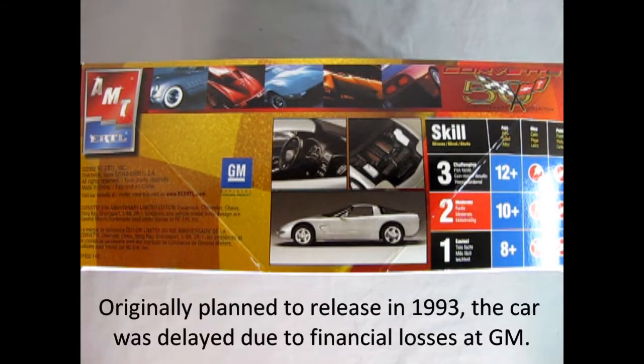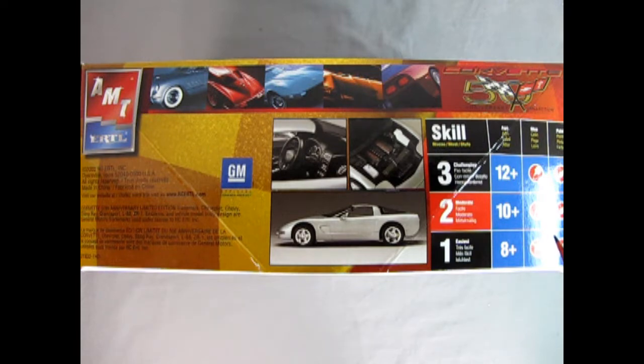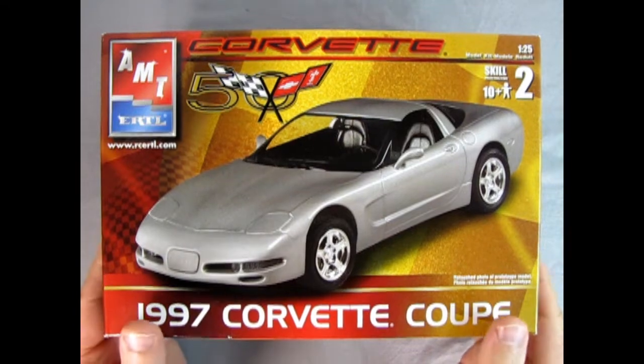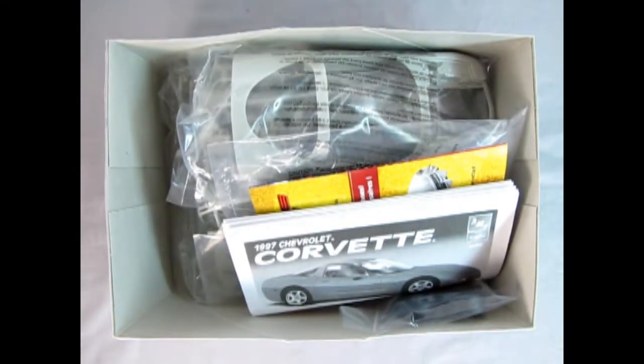On this side of the box we get a photograph of the interior of the car as well as the engine bay and the side profile. This model kit is a skill level 2 for the moderate builder, ages 10 and up, requires glue and paint to get the job done. Now we'll open up the box lid and take a look on the inside.